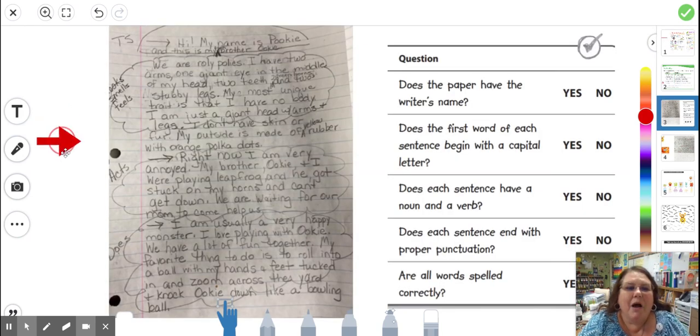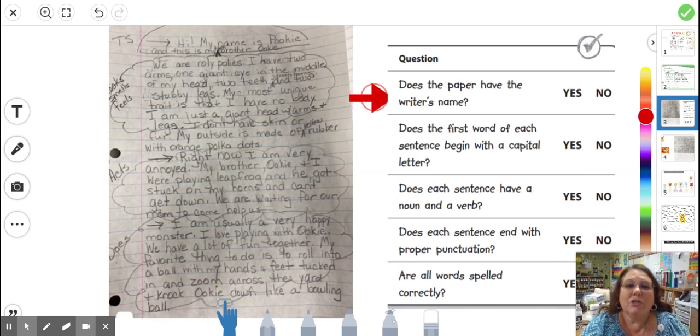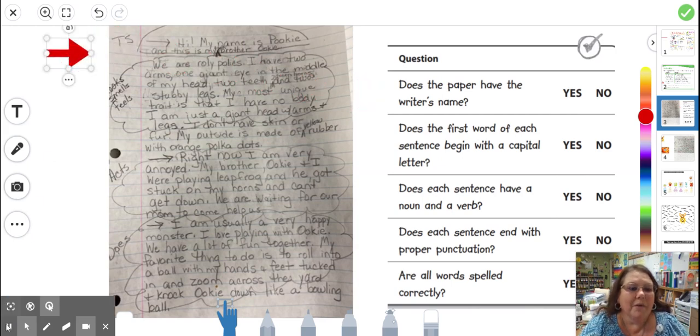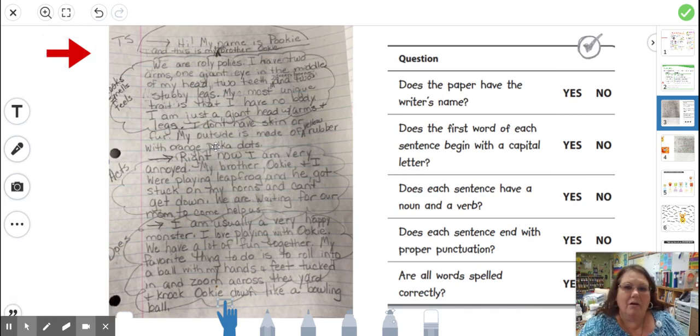I have my paper right here. And over here is our check sheet. So you can use this screen. You can pause in a minute. Use this screen to answer these questions about your paper. The first thing we're going to do, does the paper have your name? So on my paper, I need to write my name. I just did that on mine.